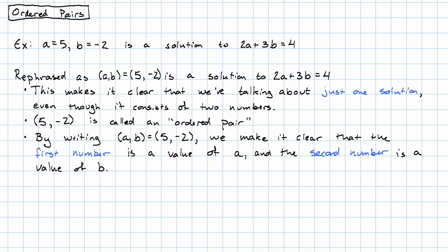By writing (a,b) equals (5, negative 2), we make it clear that the first number is a value of A and the second number is a value of B.